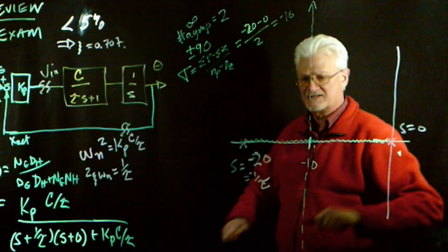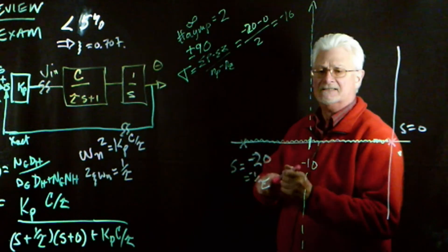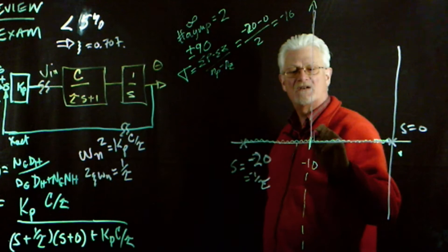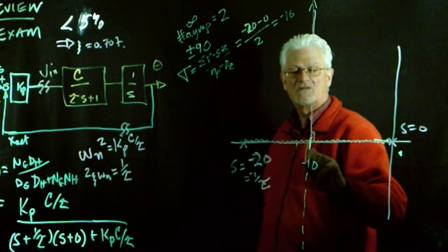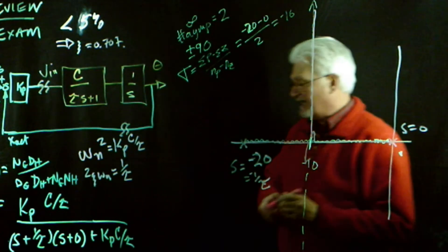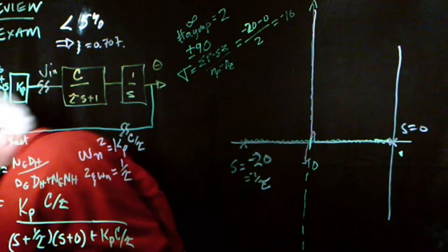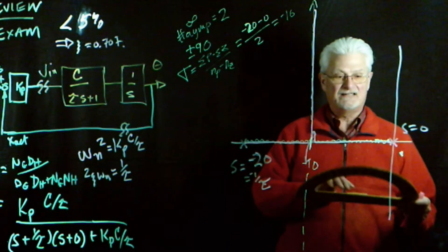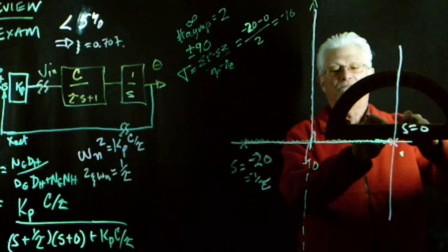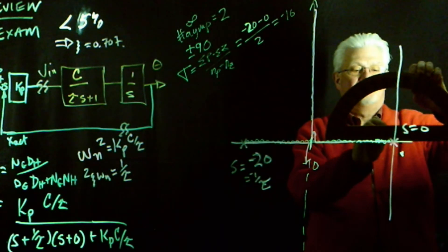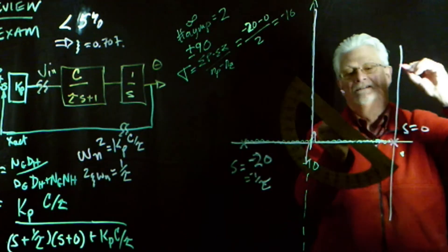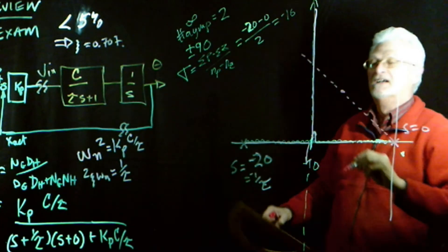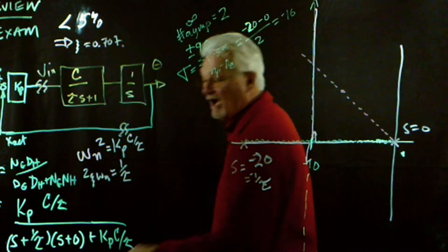We can draw the root locus for this system: one branch goes up, one goes down. Now, zeta equals 0.707 corresponds to an angle theta equals 45 degrees. I happen to have a protractor here — I could just eyeball 45 degrees — but I'm showing off my big protractor. So those are the areas that are the desired roots of my characteristic equation on the root locus.